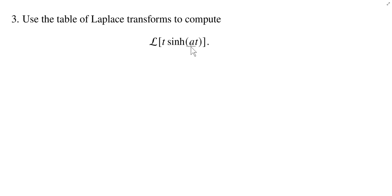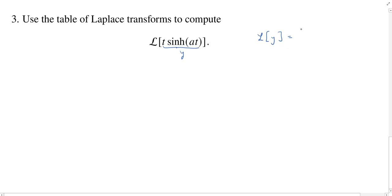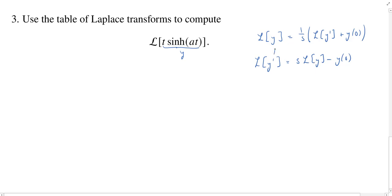We have some things in our table — we know the Laplace transform of t, and we know the Laplace transform of hyperbolic sine of t. Unfortunately, we're multiplying them together, so we can't use either of those individually. However, we have another technique: we know how to relate the Laplace transform of a function y to the Laplace transform of its derivative. The relationship is L{y} = (1/s)·L{y'} + y(0). This came from starting with L{y'} = s·L{y} − y(0), and solving for L{y}.